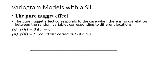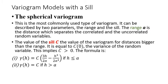The next variogram with a sill is the spherical variogram. This is the most commonly or widely used type of variogram. It has two important parameters: number one is the range, and number two is the sill. The range is the distance which separates the correlated and the uncorrelated random variables, as I'm going to explain in the diagram.